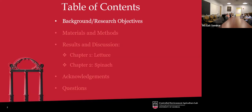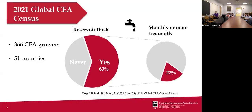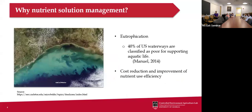Many of you may be familiar with the Hoagland solution, which is commonly used in research. The authors actually recommend draining and refilling your reservoir on a weekly basis to counter nutrient imbalance. While effective for maintaining ideal nutrient composition, there are some drawbacks. Within industry, based on the CEA census of 2021, the majority of growers are utilizing a reservoir flush to balance their solutions, with a quarter doing it on a monthly or more frequent basis.